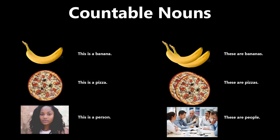When there is only one, we use the singular form. When there is more than one, we use the plural form. If we are talking about only one thing, we use the word 'a' and the singular form. If we are talking about more than one thing, we use the plural form and do not need the word 'a'.